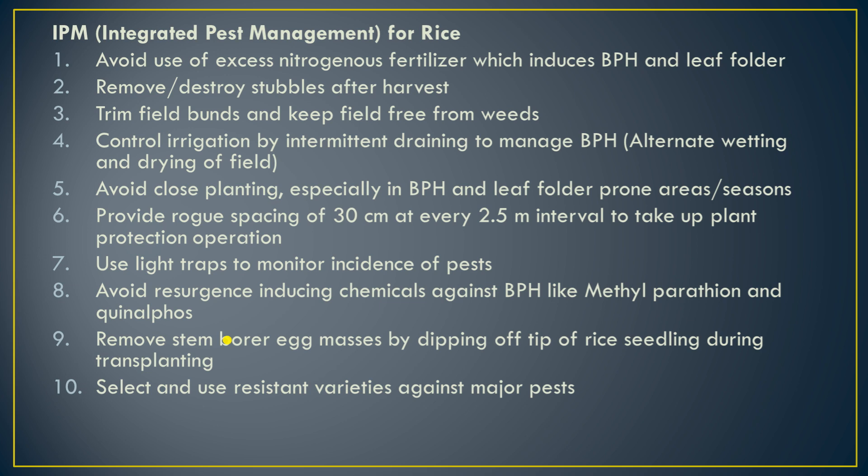Remove stem borer egg masses by dipping the tip of rice seedlings in chemical insecticide during transplanting. Since stem borer egg masses are present on rice leaf tips, we can destroy them by dipping, or by clipping the leaf tips of seedlings before transplanting so that egg masses are destroyed.